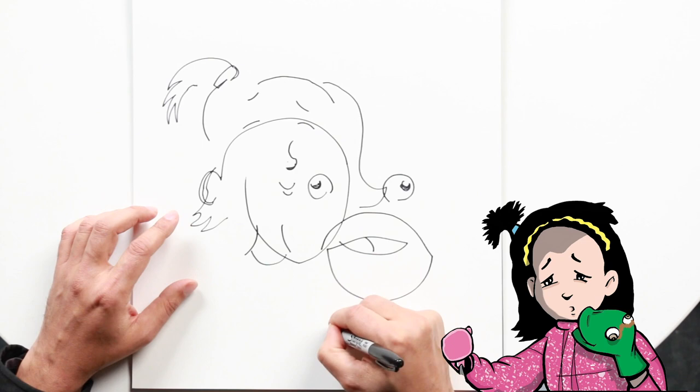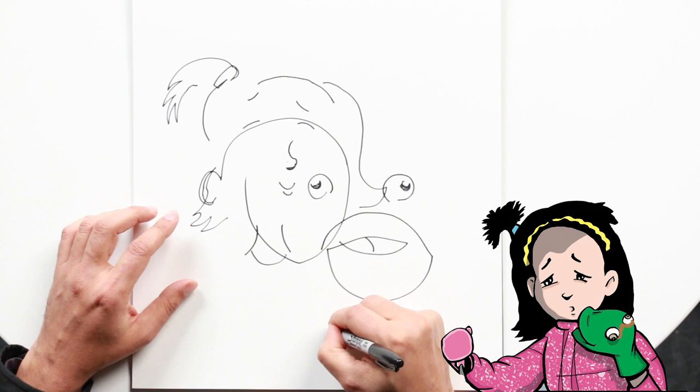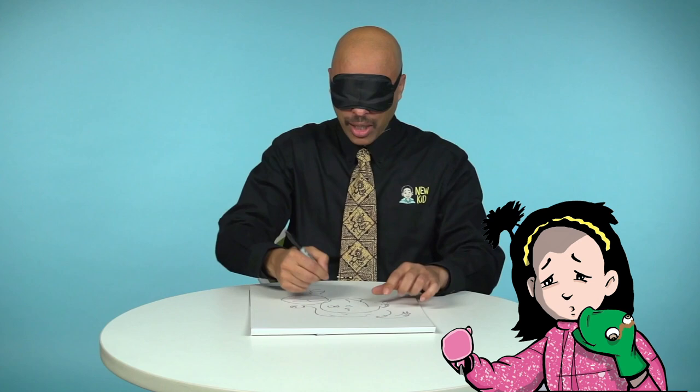I did the eyes. Oh, eyebrows. Oh, I should have done that earlier. So, eyebrows, ears. I think I gave it two ears. And, drum roll.